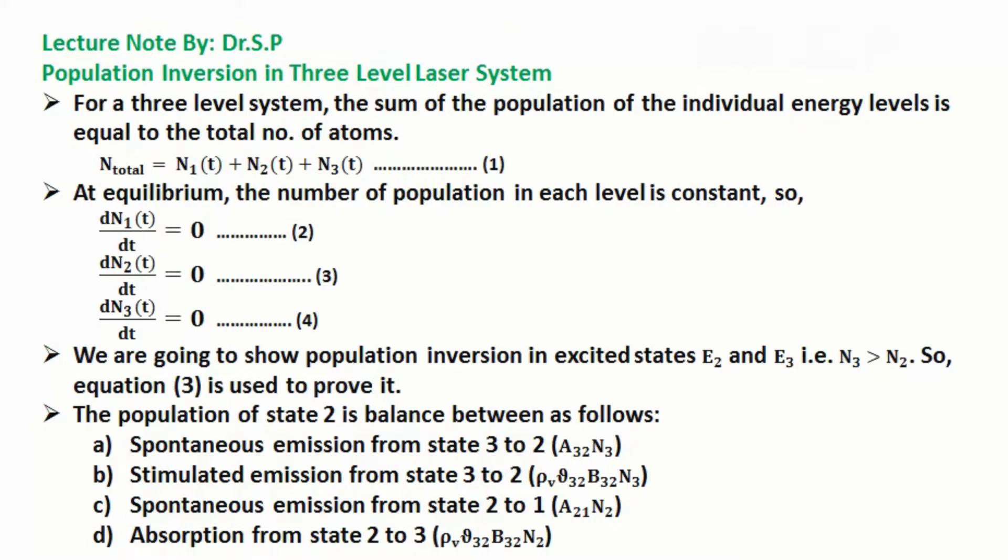At equilibrium, the number of population in each level is constant, so the rate of change in population in each energy level E1, E2 and E3 is equal to 0, which is given by equation 2, 3 and 4 respectively.